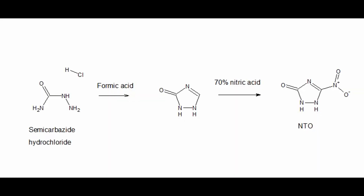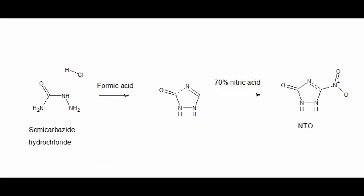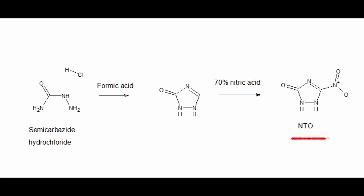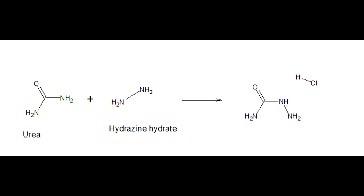First, I'll show you the scheme by which NTO is synthesized industrially. Industrially, they start with semicarbazide, then cyclize it into triazolone by boiling it in formic acid. This is followed by nitration with azeotropic nitric acid. I could replicate this scheme, but I don't have semicarbazide — although I could synthesize it relatively easily from urea and hydrazine. I don't like this synthesis; it's not very efficient and not very convenient.